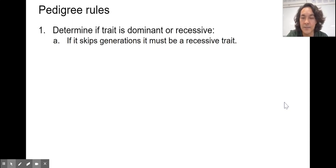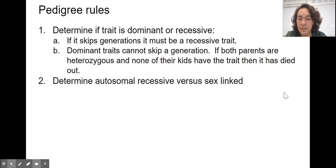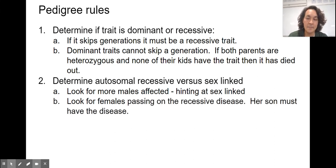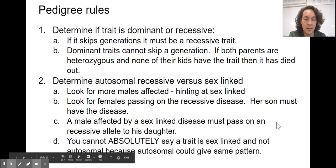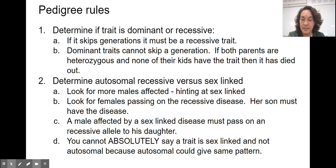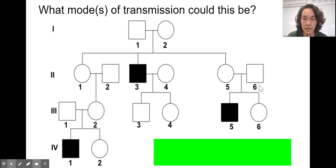All right, pedigrees. So, in pedigrees, we're going to determine if a trait is dominant or recessive. This is really important. I see it every year on the AP exam. I think it's a joy to figure these out. If it skips generations, it has to be a recessive trait. Dominant traits can't skip a generation. If both parents are heterozygous and none of the kids get the trait, then the trait has died out. You can determine autosomal recessive versus sex linked. You look for more males being affected for hinting at sex linked. And then you look at moms and sons. So, if a female is passing on a recessive disease, her son must have the disease if it is sex linked. And then you look at dads and daughters. If a daughter has a disease, her dad has to have it too if it's sex linked. And we can look at something. We can look at pedigrees to justify that in just a second. You cannot absolutely say that a trait is sex linked and not autosomal because autosomal could give the same pattern. You can just say that there's great evidence for sex linked. You can rule out sex linked, but you can never rule out autosomal recessive for that.